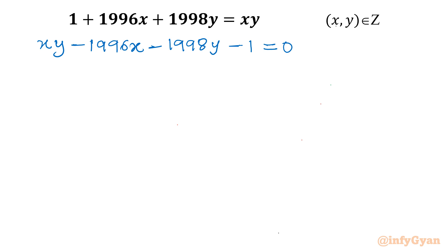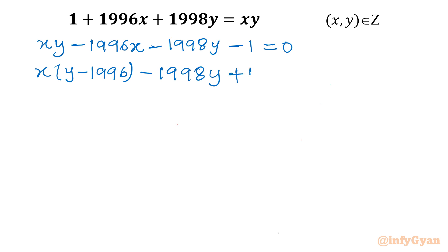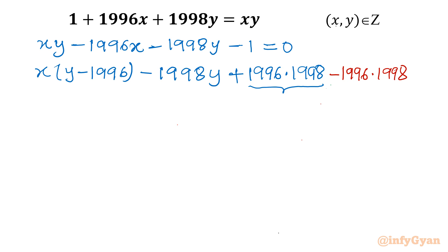From the first two terms I can see x is common, so let us factor out x giving x times (y minus 1996). From the next term I have to also consider y minus 1996 in order to factorize. So I will write 1998y as is, then add and subtract 1996 times 1998, take 1998 common leaving y minus 1996 in bracket, then subtract that extra term 1996 times 1998, and the rest remains minus 1 equal to 0.